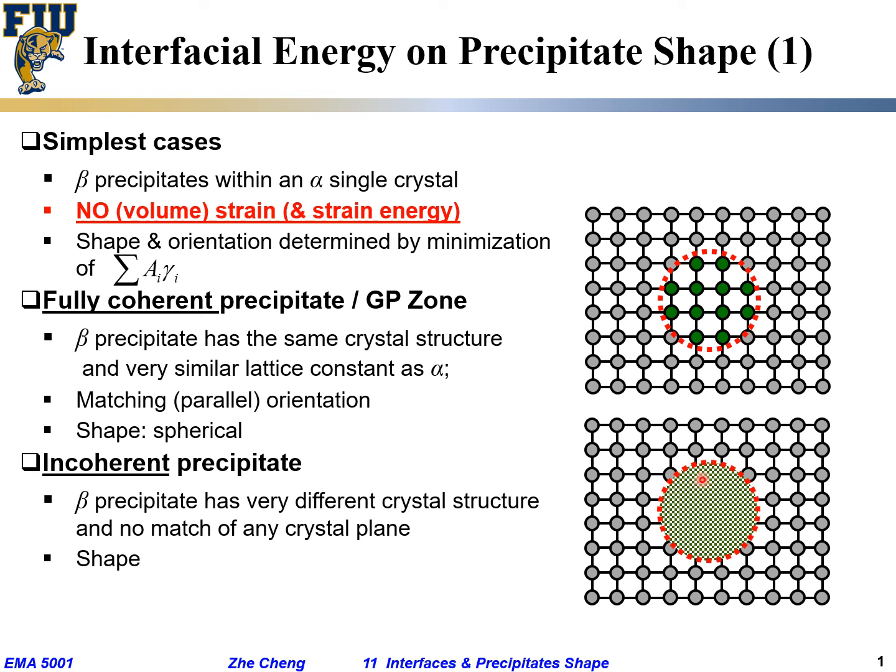In order to minimize the total interfacial area, because in this case, the interfacial energy does not really depend on misorientation or whatsoever. It's just a constant value. And in that case, you are just trying to minimize the total surface interfacial area. It's spherical, very common. But in some cases, people may see other shapes, but they don't really indicate so-called coherency.